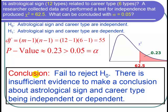So I can conclude that there is insufficient evidence to make a conclusion about astrological sign and career type being independent or dependent. And I'm done with the problem.